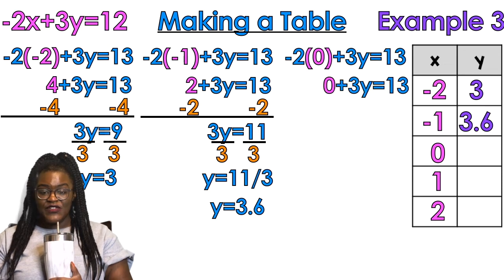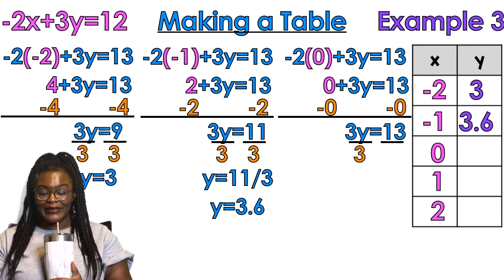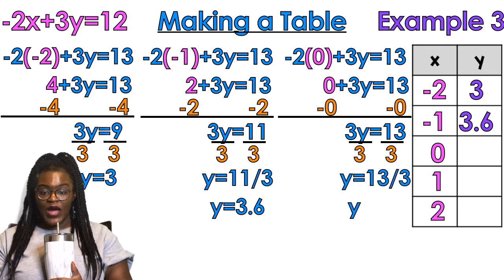We're plugging in zero now: zero times negative 2 is zero. I don't need to subtract zero, but for consistency I do it. Divided by 3 — 13 divided by 3 — y equals 13 thirds, which is approximately 4.3.